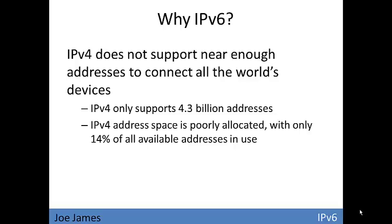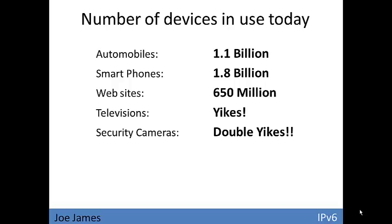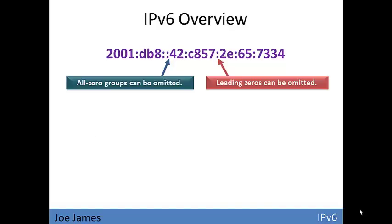IP version 6, developed in the 90s, provides far more address space than IP version 4. IPv4 is limited to only 4.3 billion addresses, which is fewer than there are people in the world. But if you look at the number of devices already existing — automobiles, smartphones, websites, televisions, security cameras, thermostats, servers, even your watch someday — any electronic device may eventually be connected to the Internet. IPv6 accommodates that vast number of devices.